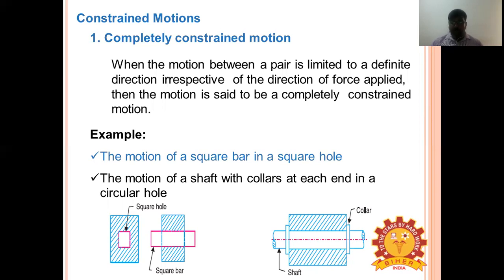Another example of completely constrained motion: a circular shaft in a round hole with two collars attached on either side — only rotary motion is possible, no reciprocating motion.